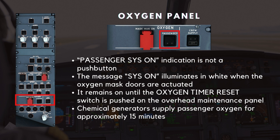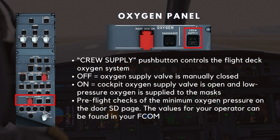The system on light remains on until the oxygen timer reset switch is pushed on the overhead maintenance panel. Chemical generators supply passenger oxygen for approximately 15 minutes. The cruise supply push button controls the flight deck oxygen system. When in the off position, the off light illuminates white and the oxygen supply valve is manually closed. When the push button is selected on, the off light extinguishes and the cockpit oxygen supply valve is open, supplying low-pressure oxygen to the masks. Pre-flight checks of the minimum oxygen pressure can be found on the door SD page; the values for your operator can be found in your FCOM.